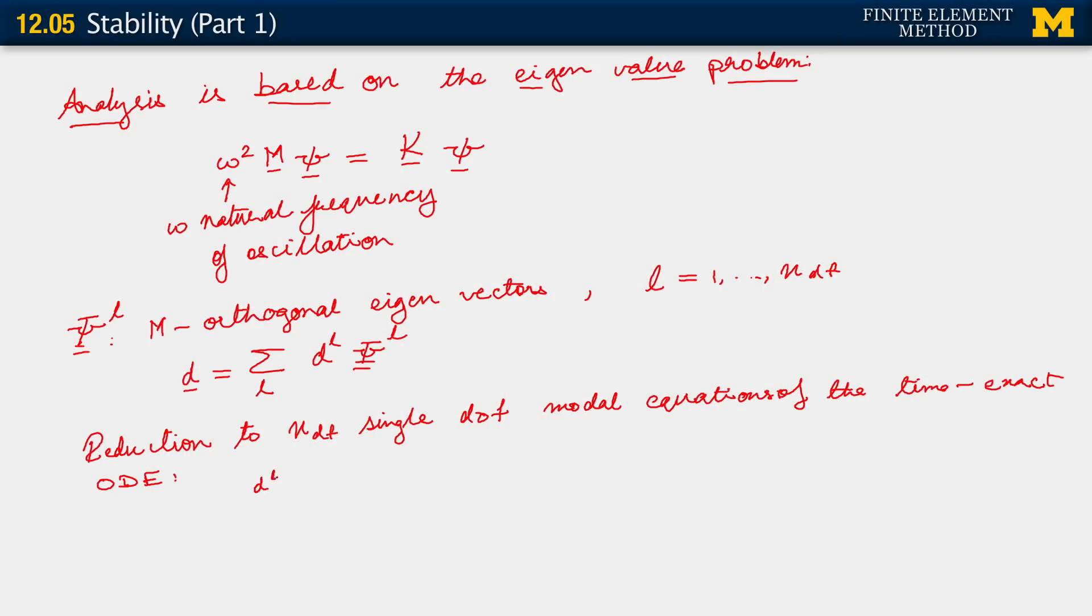The form of those equations is the following for the time exact ODE now. This is pretty much the way we did it for the parabolic problem also. We wrote out the reduction for the time exact ODE, and then extended that to the time discretized ODE. For the time exact ODE, we would get DL double dot plus 2 C L omega H L DL dot plus omega H square DL equals 0 if we consider the homogeneous case.